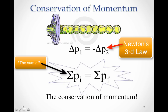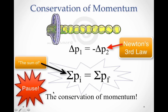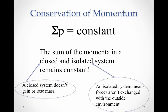Afterwards, the tennis racket has slowed down and the tennis ball has picked up speed. If we add up the momentum of both objects after the collision — the sum of the final momentum of the tennis racket and the final momentum of the tennis ball — we find they are equal. That is the law of conservation of momentum: the sum of the momenta in a closed and isolated system remains constant.